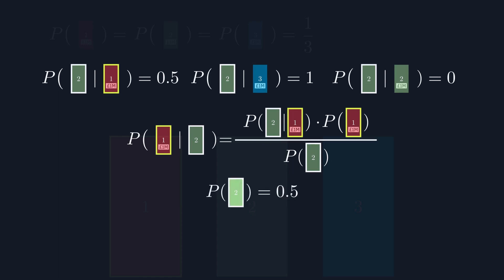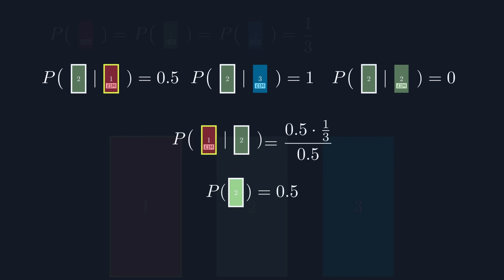We can substitute all these values into our new formula to determine the probability of the money being behind door one is indeed one in three. Though this is a fairly interesting example, the real gem here is Bayes' theorem, which is able to update our assumptions based on new information, something humans are very poor at doing. This is what makes the formula so useful to statisticians and to those who want to better understand the world.